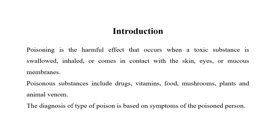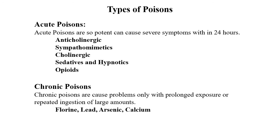Poison symptoms vary. Acute poison causes symptoms within 24 hours. Chronic poison results from prolonged exposure — if you are exposed to a chemical for 6 months, 1 year, or 2 years, it is considered a chronic toxin.